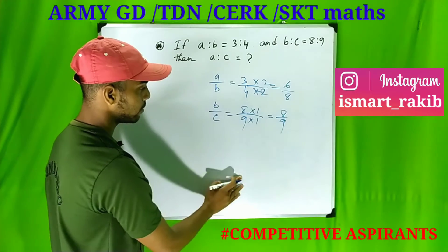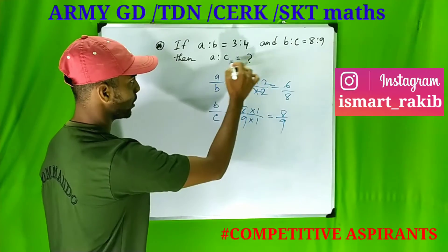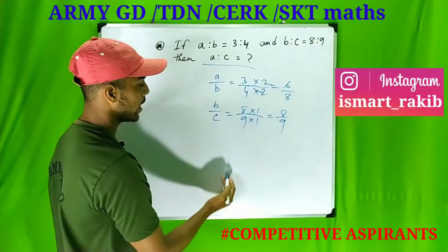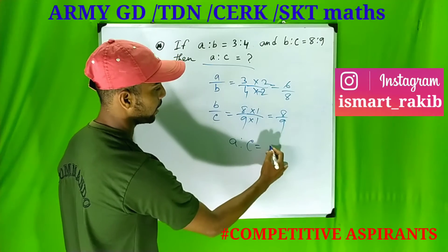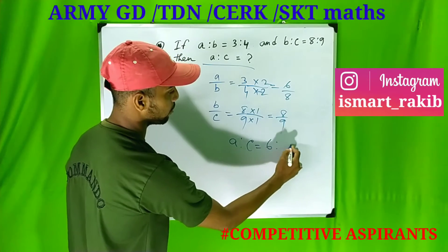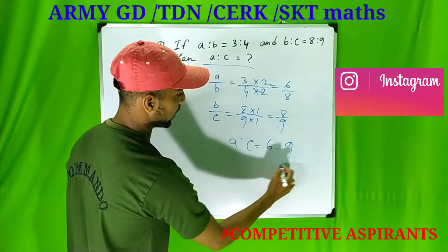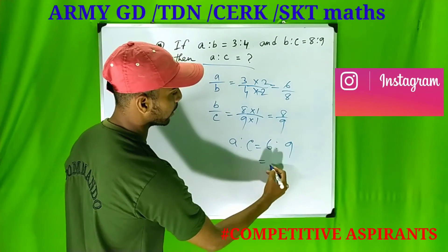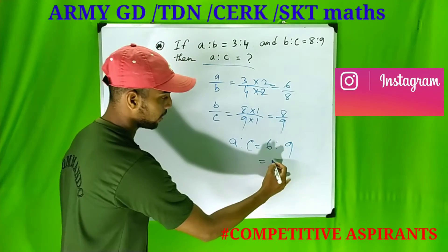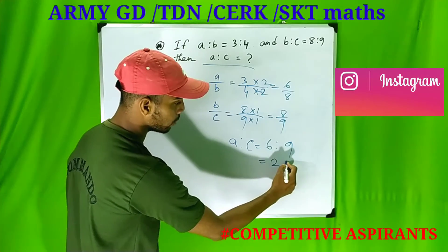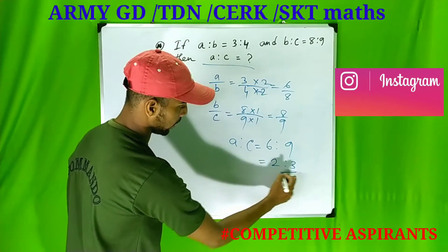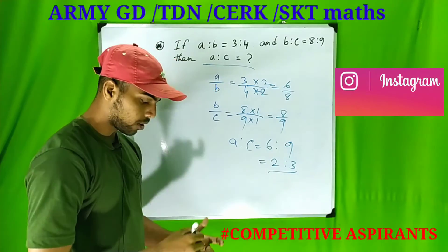This is the ratio of a to c. So, a to c is 6 to 9, and the ratio of a to c is 2 to 3.